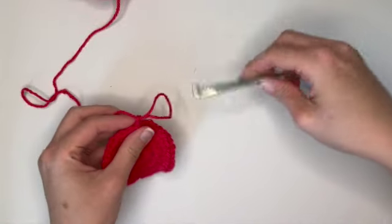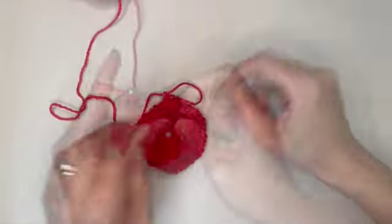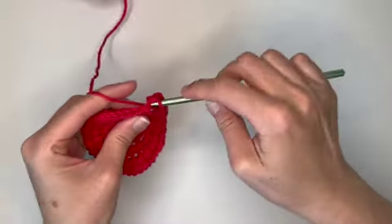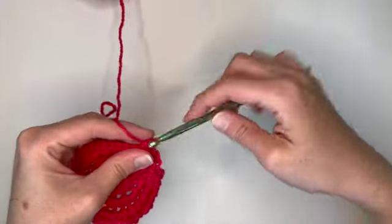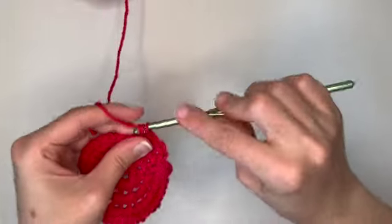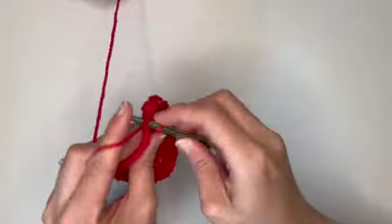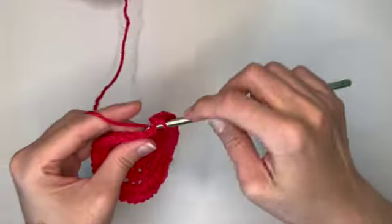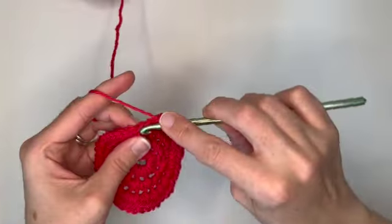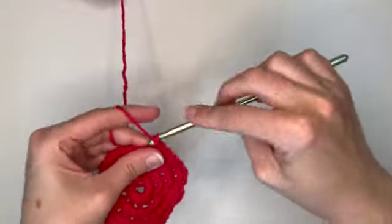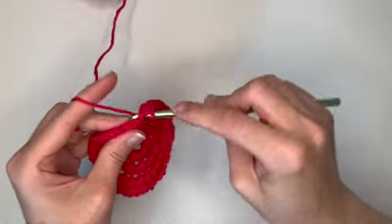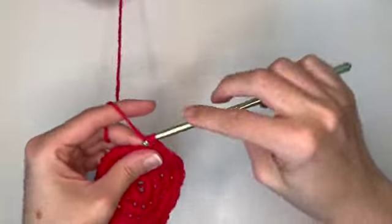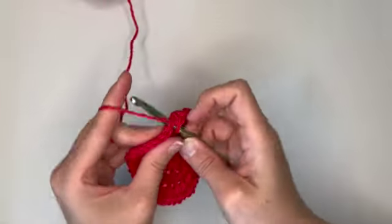All right, so this is where the pattern is going to get a little bit different. So we're just going to do single crochets into each one of these. So once you have the single crochet pattern down for this round, that's really all we're going to do for our last round. So at the end of this one we're going to do another slip stitch, chain one, and then one more round of single crochets and that's going to be it.